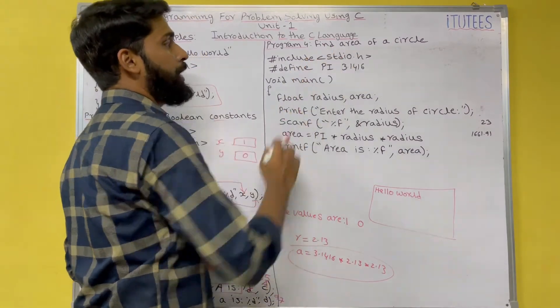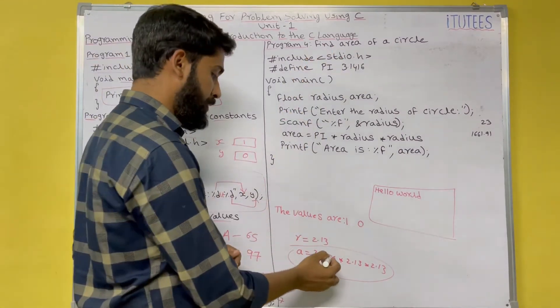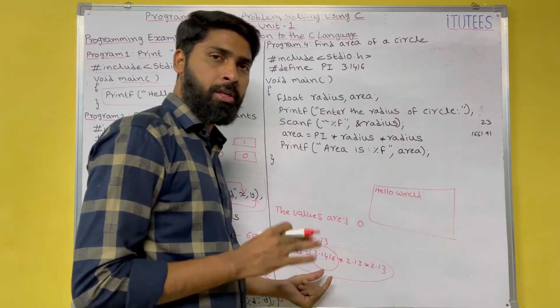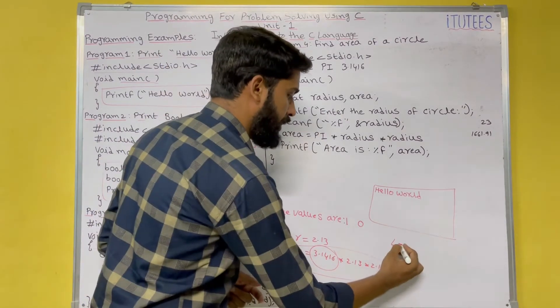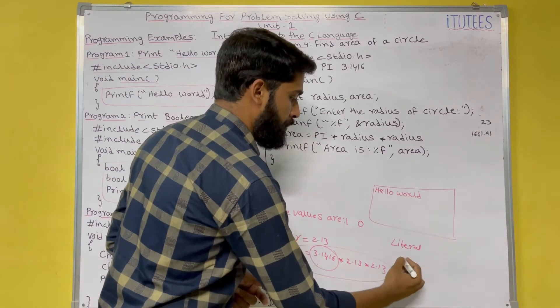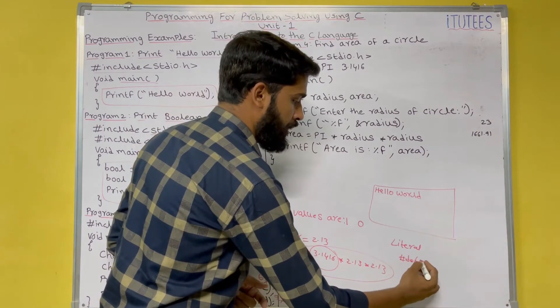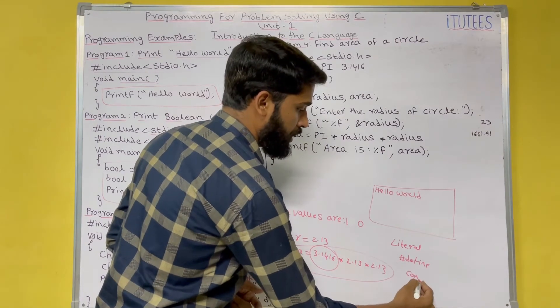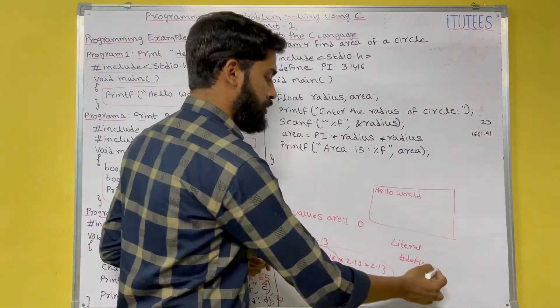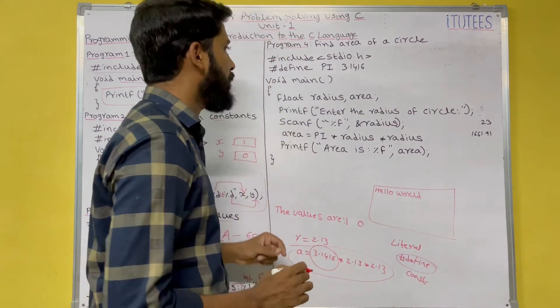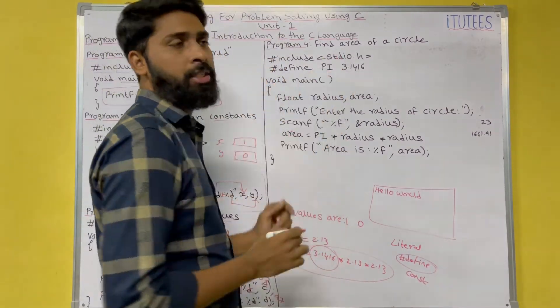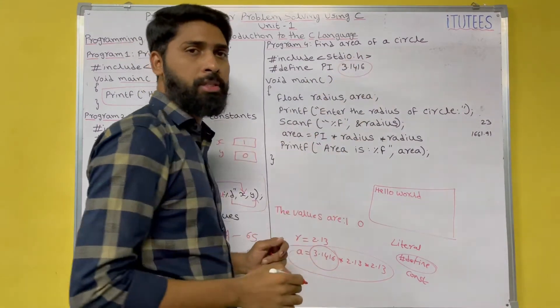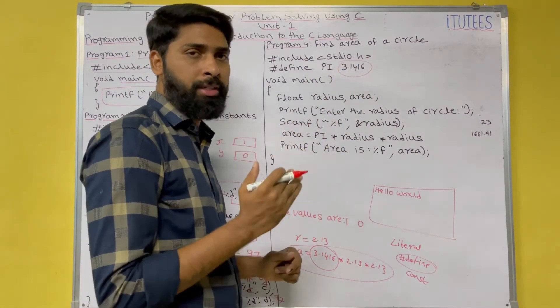To find the area, we need one constant. That is pi. You can take this pi constant in three ways. One is by using the literal. By using the define. By using memory constant, by using the const keyword. In this program, I am using define. Hash include stdio.h. Hash define pi 3.1416. Here, I am going to write the program to find the area.